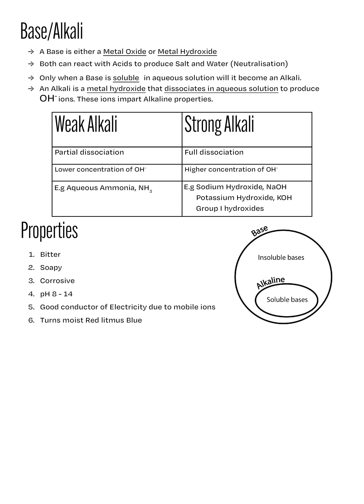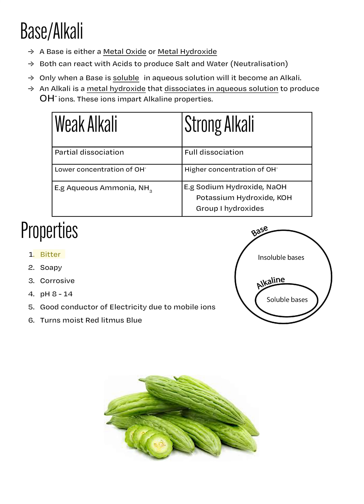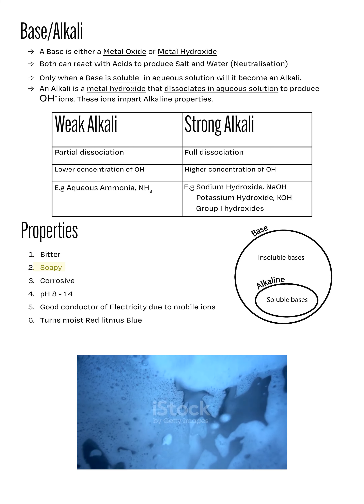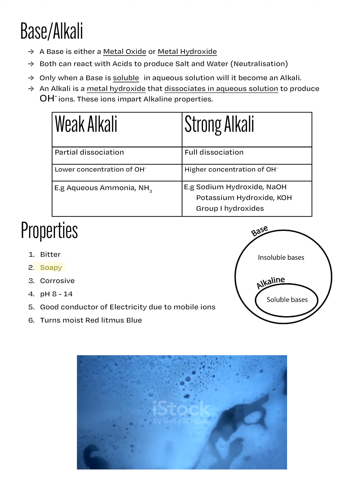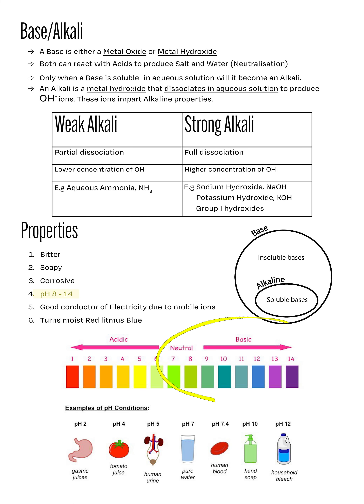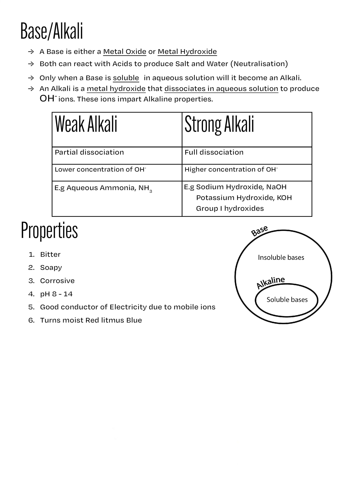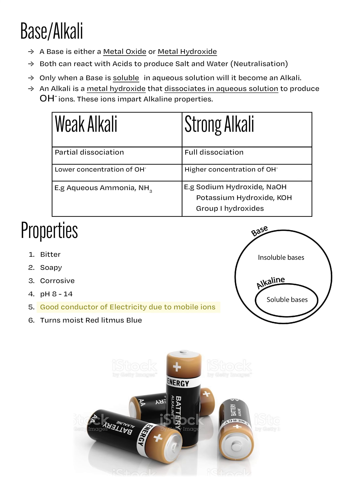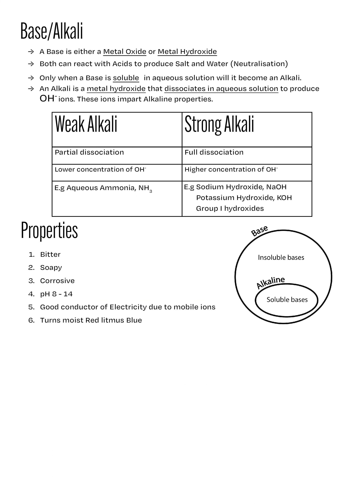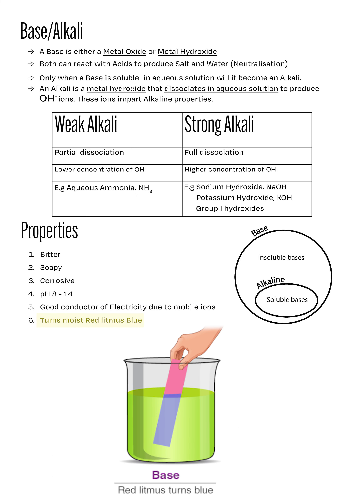Due to the presence of hydroxide ions, alkalis have the following properties: number one, alkalis taste bitter; number two, alkalis feel slippery and soapy; number three, their pH is above 7; number four, just like acids, alkalis are good conductors of electricity due to the presence of mobile ions; and lastly, alkalis turn moist red litmus paper blue.